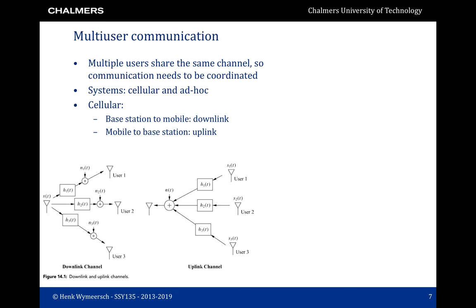So far, everything in this course related to single-user communication — communication between one transmitter and one receiver. In practice, there will be multiple users that share the same physical channel, so the same time-frequency resources. This means that the communication should be coordinated. There are broadly speaking two types of communication systems: cellular and ad hoc. Ad hoc will be deferred to later in this lecture, but let's first talk about cellular.